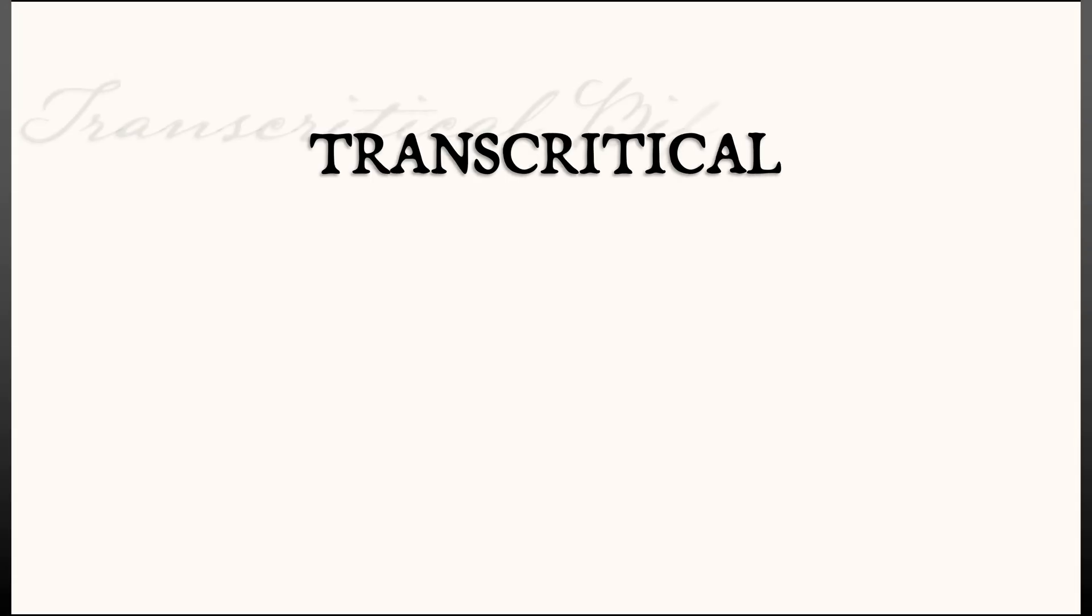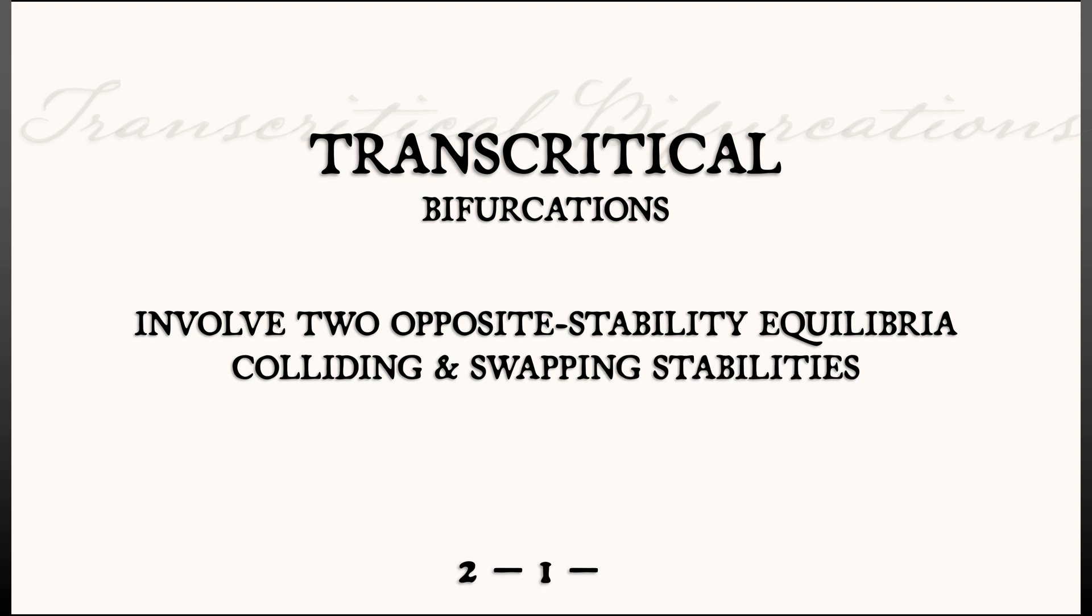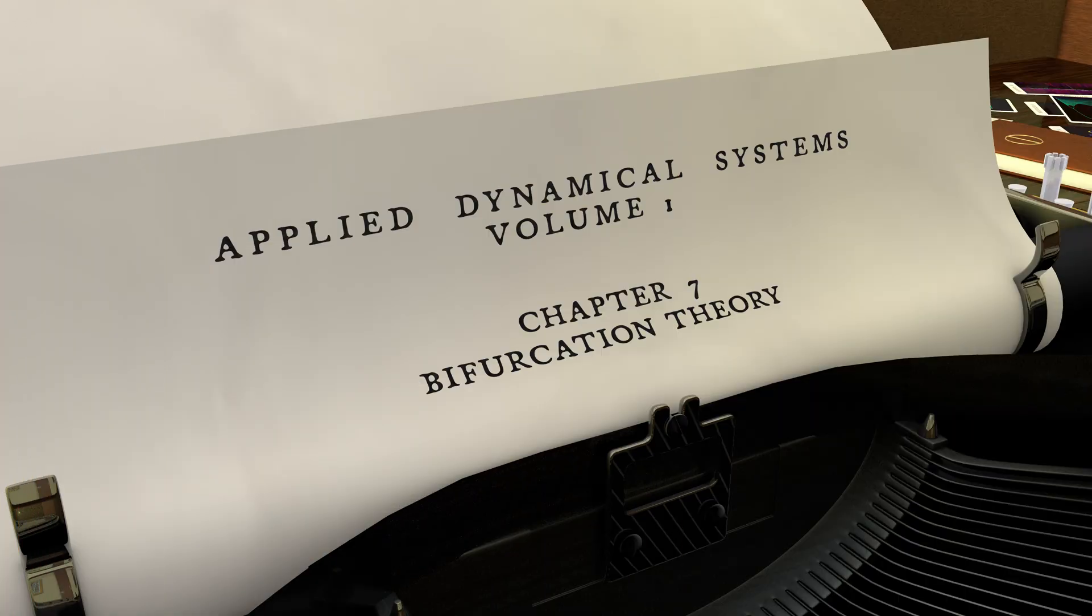Again, transcritical bifurcations involve two opposite stability equilibria colliding, swapping stabilities. You're going from two equilibria to one equilibrium, back to two.